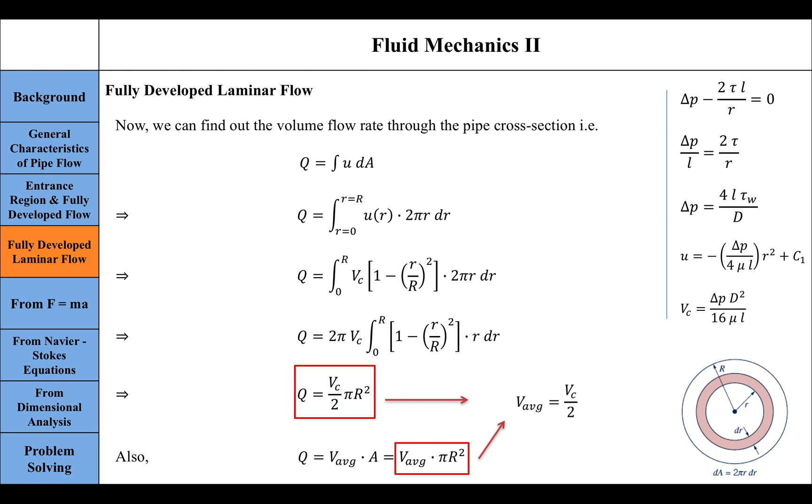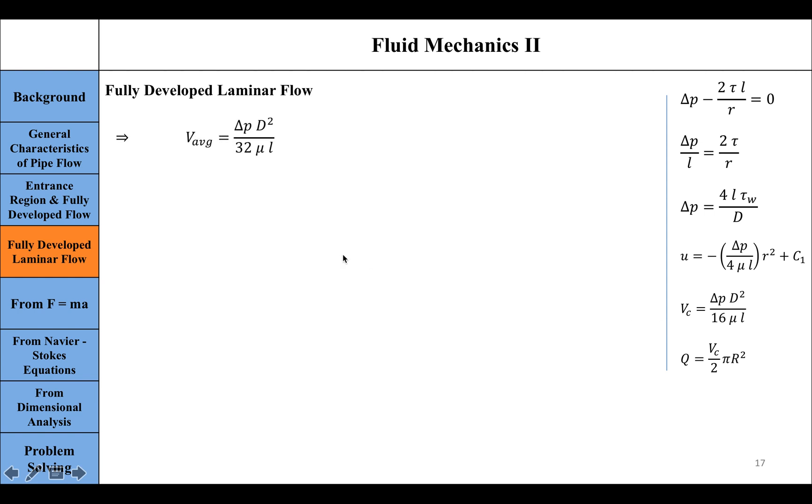Now we can plug this into the expression for centerline velocity. If we do that, we'll be able to find the expression for average velocity in our pipe.